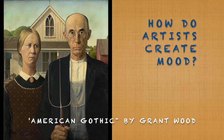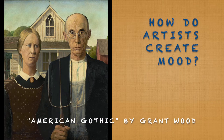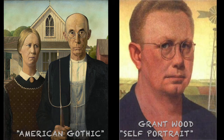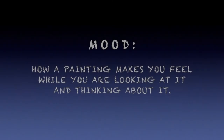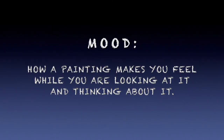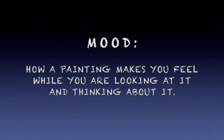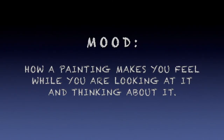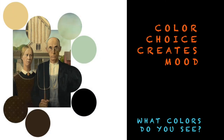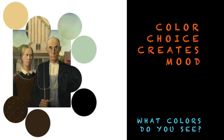Today we will think about the mood the artist Grant Wood is communicating in his work American Gothic. Mood is how a painting makes you feel while you are looking at it and thinking about it. One way an artist creates mood is by using color.